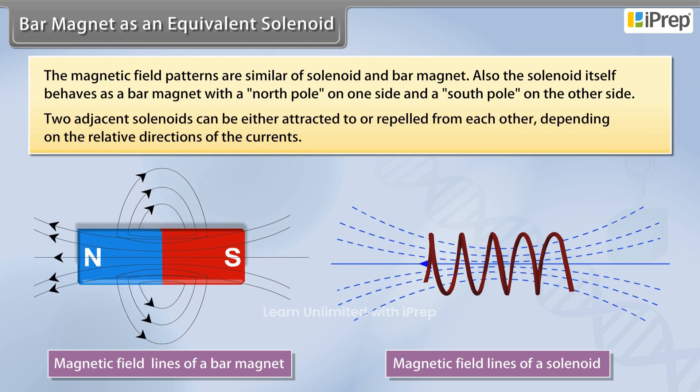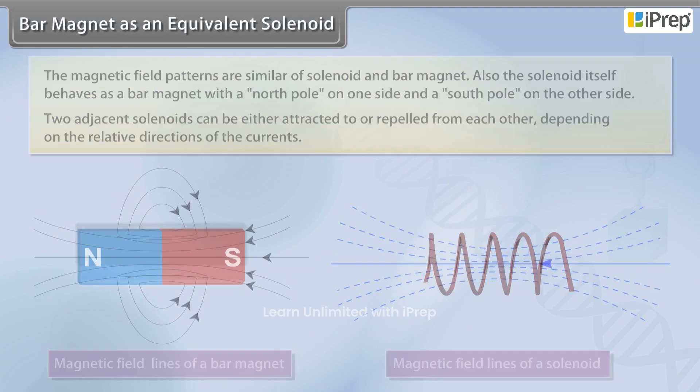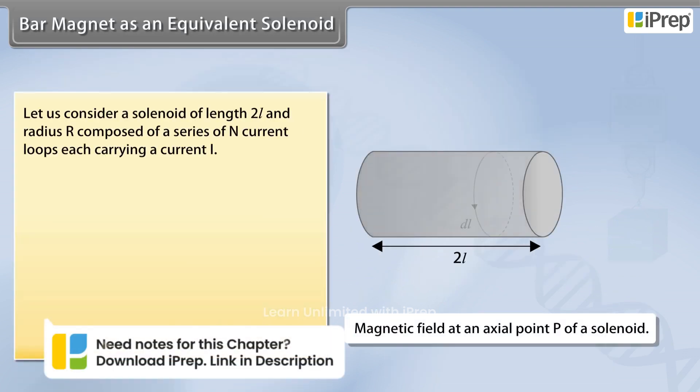Two adjacent solenoids can either attract or repel each other, depending on the relative directions of the currents. Let us consider a solenoid of length 2L and radius R composed of a series of n current loops, each carrying a current I.